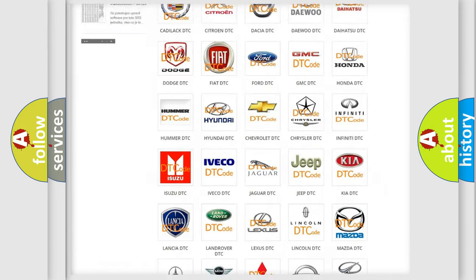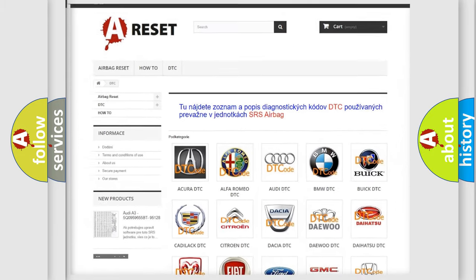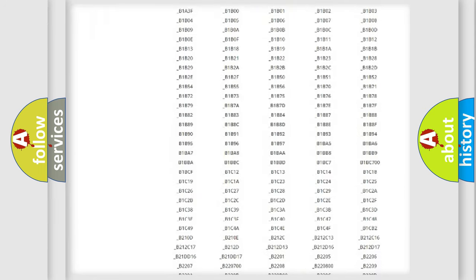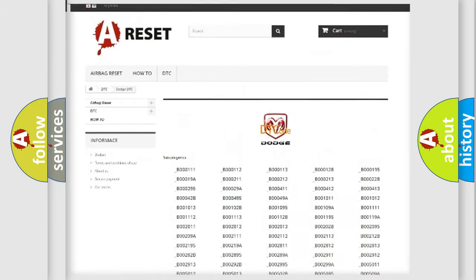Our website airbagreset.sk produces useful videos for you. You do not have to go through the OBD2 protocol anymore to know how to troubleshoot any car breakdown. You will find all the diagnostic codes that can be diagnosed in Dodge vehicles.